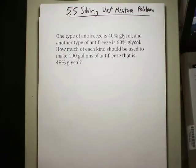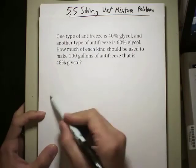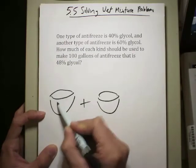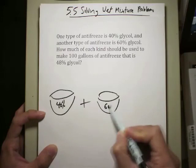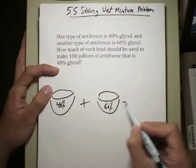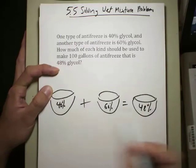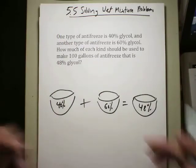But let me just quickly summarize this for you. One type of antifreeze is 40% glycol, another type of antifreeze is 60%. So right away, you have two kinds. The 40% kind and the 60% kind. And you want your end result to be a 48% kind. Read it carefully, and I want you to complete this.